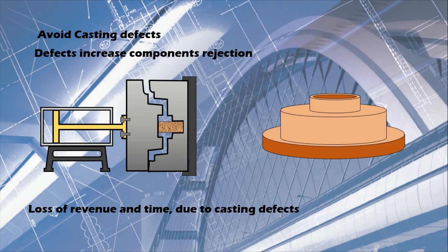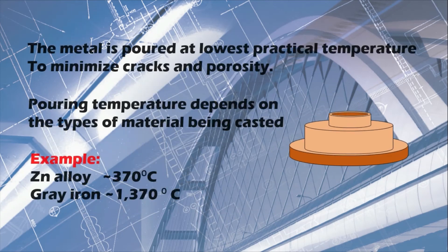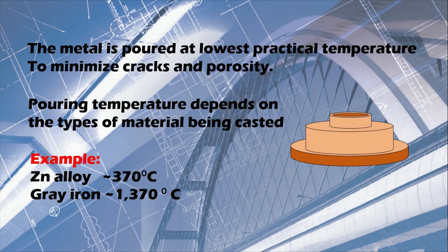The metal is poured at the lowest practical temperature in order to minimize cracks and porosity. The pouring temperature can range greatly depending on the casting material. For instance, zinc alloys are poured at approximately 370 degrees Celsius, while gray iron is poured at approximately 1370 degrees Celsius.